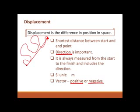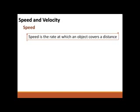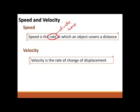Speed is the rate at which an object covers a distance — rate means divide by time, so anything that is the rate of something must have a time value attached to it. Velocity is the rate of change of displacement. Distance is a scalar so speed is a scalar; displacement is a vector so velocity is a vector. Velocity and displacement must have the same direction.